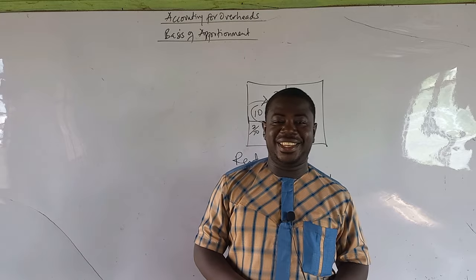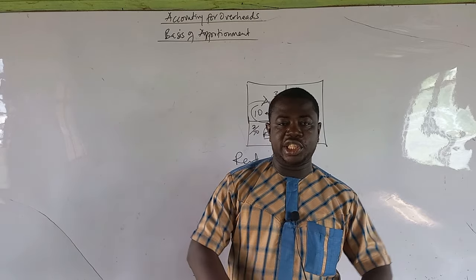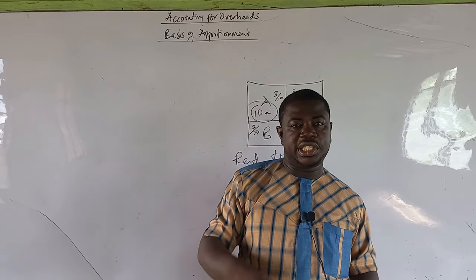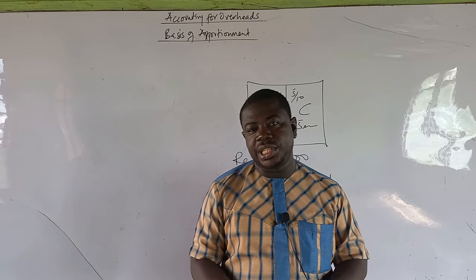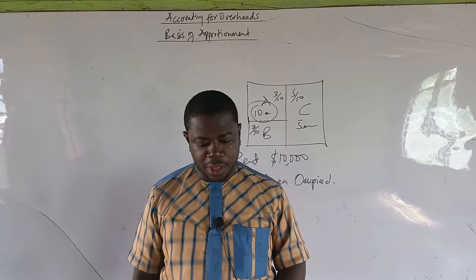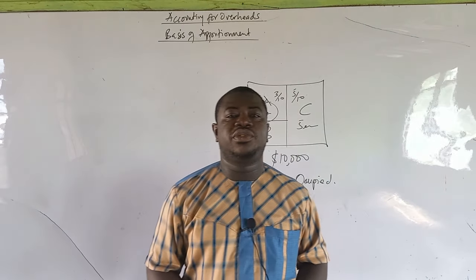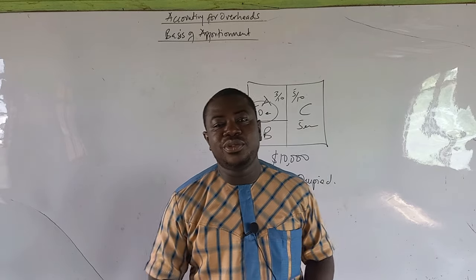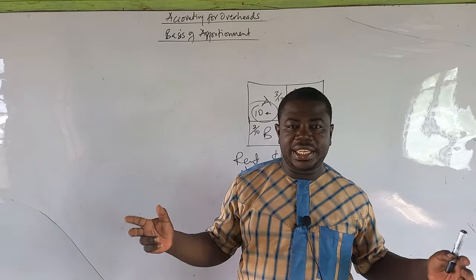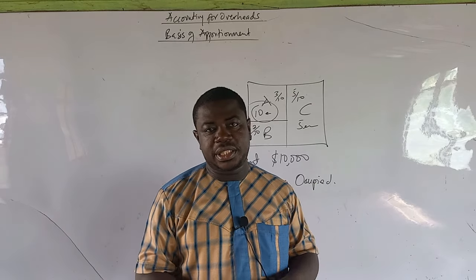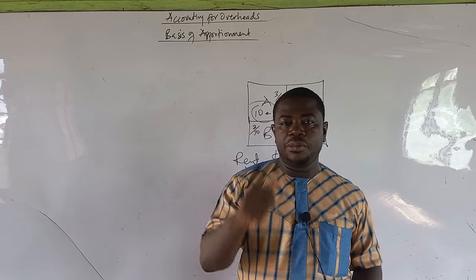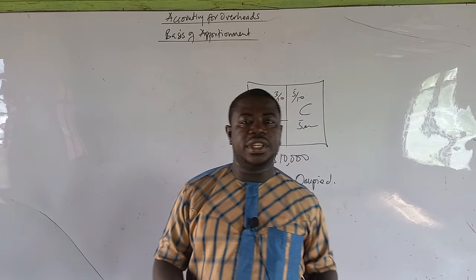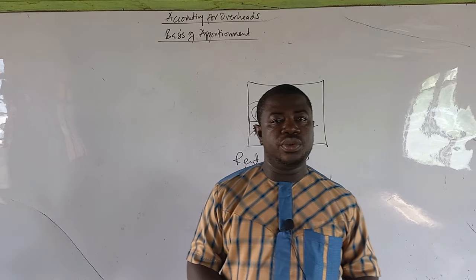This list may look lengthy, but questions will only present three to five items — you choose the most suitable basis for each expenditure. This brings us to the end of part one of our lesson on accounting for overheads. In part two, we will deal with the overhead analysis sheet — I'll give you the format and we'll solve a question. Remember to subscribe to this channel if it's your first time, and share this video. Until we meet again for part two, bye for now.